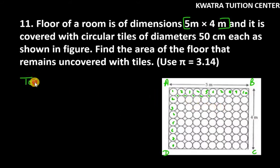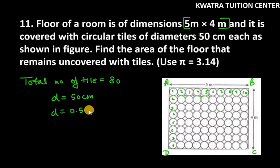Total number of tiles, let's write the total number of tiles first. Now, the diameter of the tile is 50 centimeter. It is in centimeter. But what should it be? Meter. Because our dimensions are also in meter, so we will convert it to meter. So, diameter is 0.5. Radius is 0.25 meter.